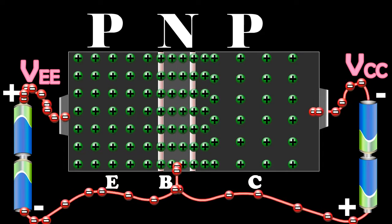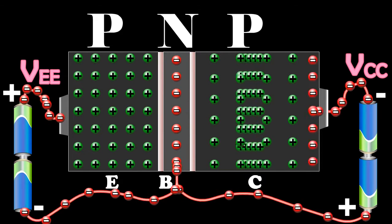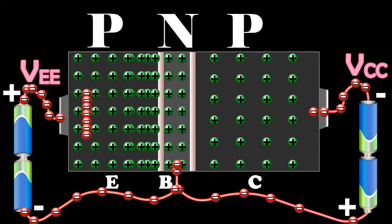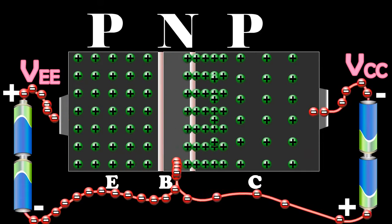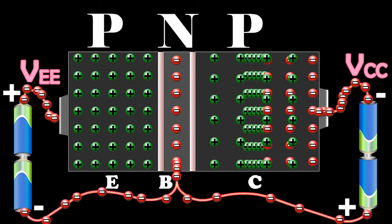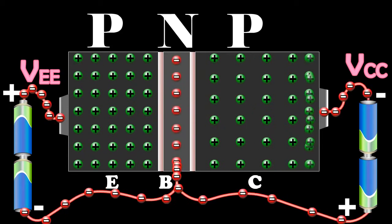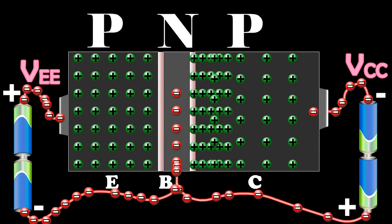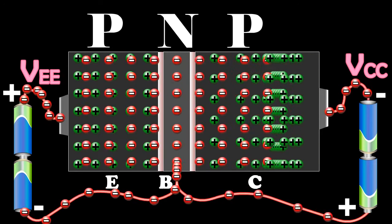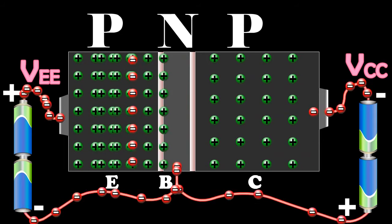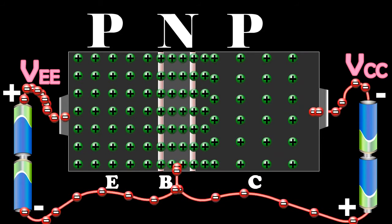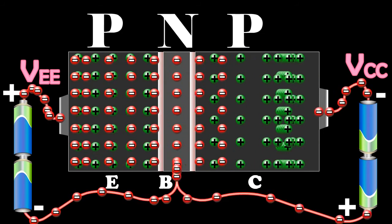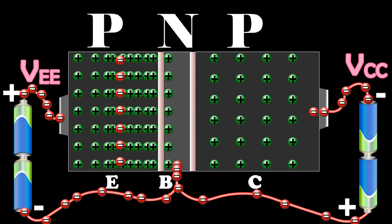The remaining number of holes which do not undergo the recombination process in the base reach the collector. These are neutralized by an equal number of electrons flowing from the negative terminal of the battery VCC into the collector. At the same time, an equal number of electrons flow from the negative terminal of VEE and reach the positive terminal of VCC. The flow of holes per second from the base to the collector gives rise to the collector current IC. In the external circuit, it is due to the flow of electrons from the negative terminal of the battery VCC into the collector.